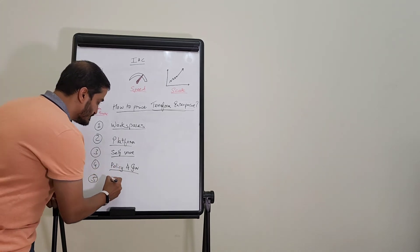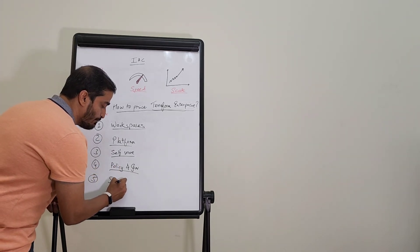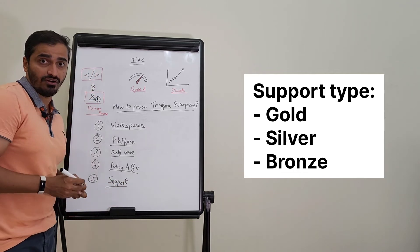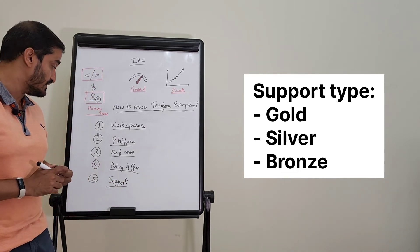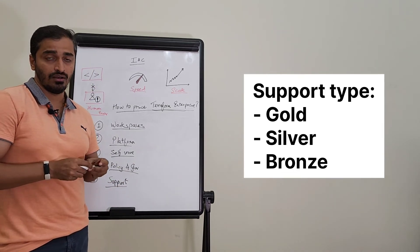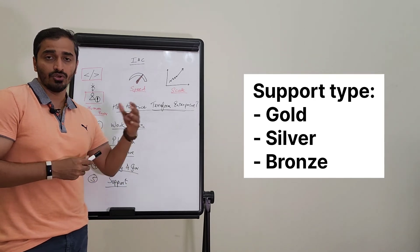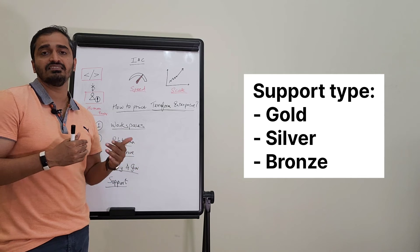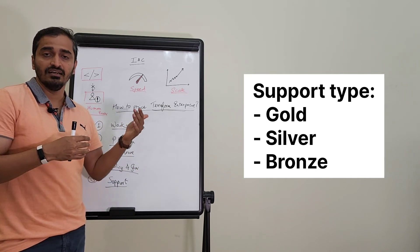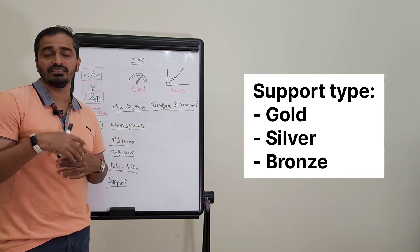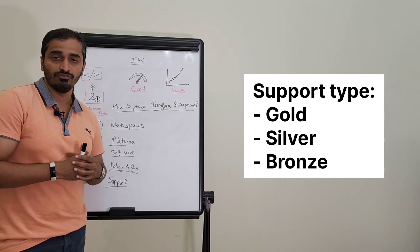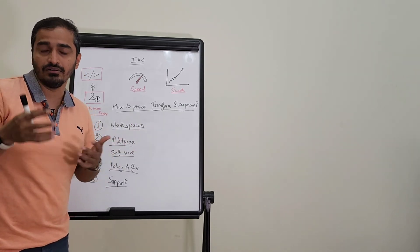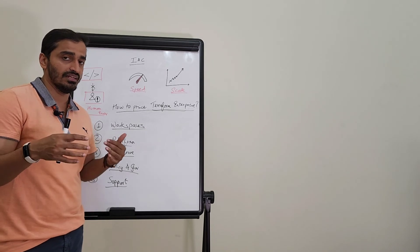Last but not least is the support level. Like every other HashiCorp solution, there is Gold, Silver, and Bronze tiers determining different SLA levels, severity levels, and the kind of support — whether it's 24x7 or Monday to Friday — and the number of working hours they will support you for during that time frame.